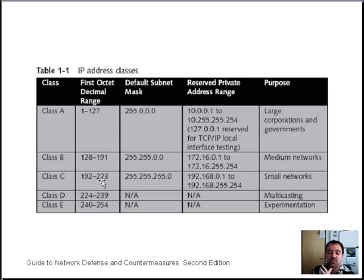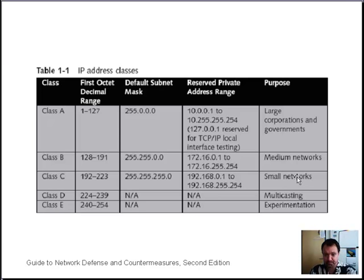Class C networks have a default subnet mask of 255.255.255.0, range from 192.0.0.0 to 223.255.255.255, and are for smaller networks. There is also a private reserved range for class C addresses.